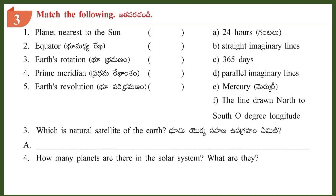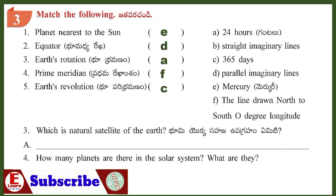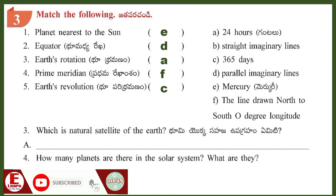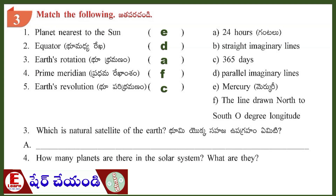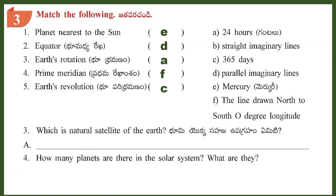Section 3: Match the following. Question 3: Which is the natural satellite of the Earth? Answer: Moon is a natural satellite of the Earth.